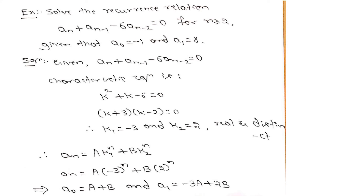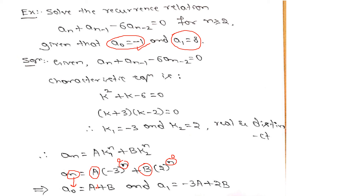Since the values of A0 and A1 are given, let us use these two initial values to find the arbitrary constants A and B. Since A0 is given as minus 1, we replace n by 0 in the solution relation. Minus 3 to the power 0 is 1 and 2 to the power 0 is 1, so A0 equals A plus B. Substituting the value of A0 as minus 1, we get equation 1: A plus B equals minus 1.